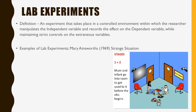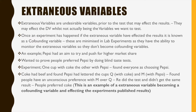Mary Ainsworth's Strange Situation was about attachment between an infant and a mother. She did it in a lab, as you can see, with cameras to record everything, so all the variables can be controlled.